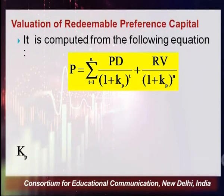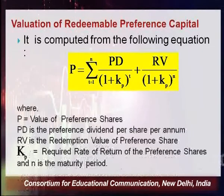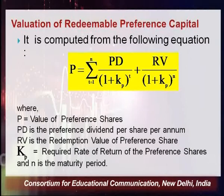Taking total life as n and the discounting rate as kp, the formula discounts preference dividend each year at (1 + kp)^t and the redemption value at the end. In this formula, P is the value of preference shares, PD is the preference dividend per share per annum, RV is the redemption value, kp is the required rate of return on preference shares, and n is the maturity period.